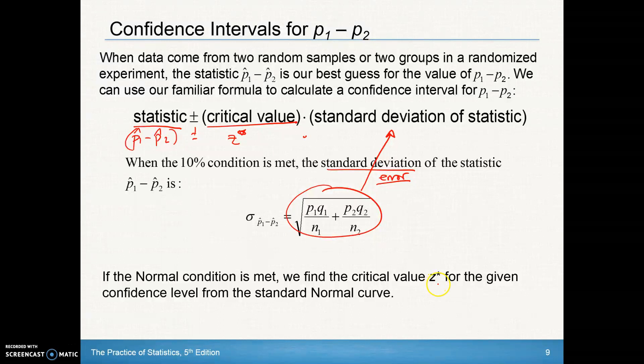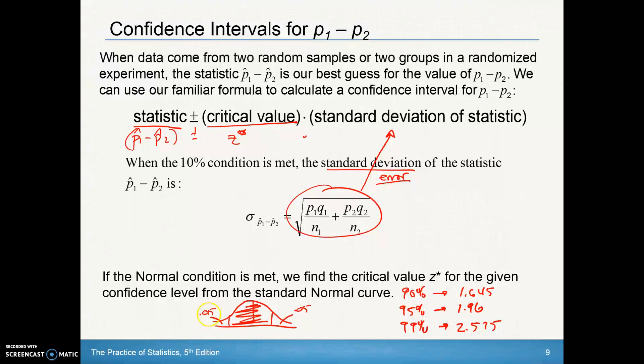We're going to look for those critical value Z-stars for given confidence levels. Many of you might remember that a 90% confidence level gives us a Z-score of about 1.645. 95% gave us 1.96. 99% gave us 2.575. Remember they were on the normal curve. If calculating a 90% confidence interval, I want that middle part to be 90%, which means 0.05 in each tail. You'd look at that 0.05 in the tail of the chart, and that's about negative 1.645. Because the distribution is symmetric, this would be 1.645.